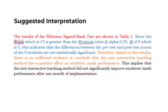The text in orange is our conclusion: 'Therefore, based on the results, there is no sufficient evidence to conclude that the new interactive teaching method has a positive effect on students' math performance.' The last sentence is our implication: 'This implies that the new interactive teaching method did not significantly improve students' math performance after one month of implementation.' Our interpretation has all four elements, making it complete.